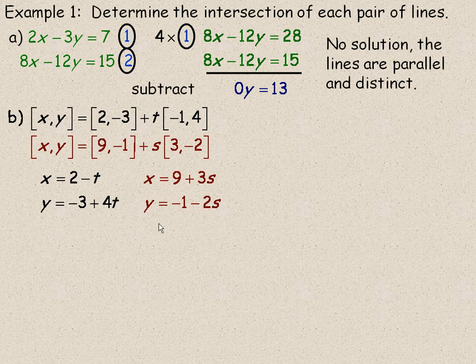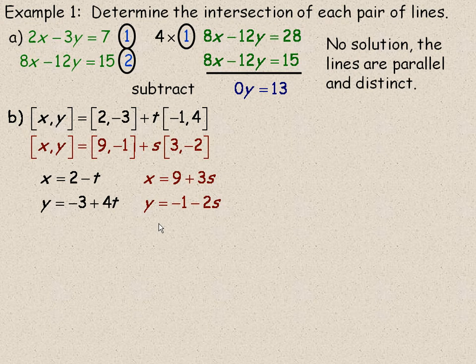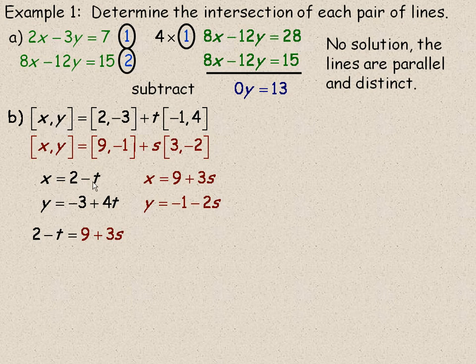Now, we are trying to find the point that is in common to both of these lines. So I am going to equate the two expressions for x. So I am going to equate 2 minus t and 9 plus 3s.